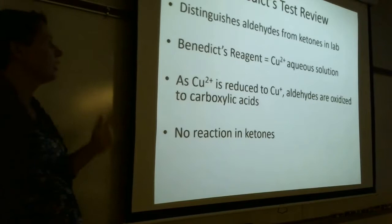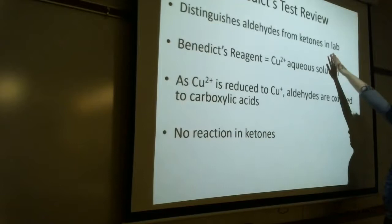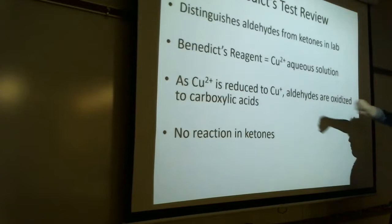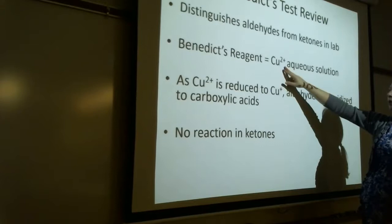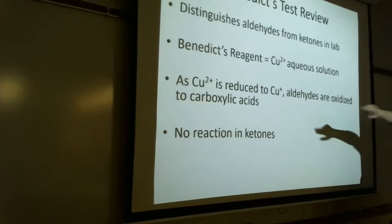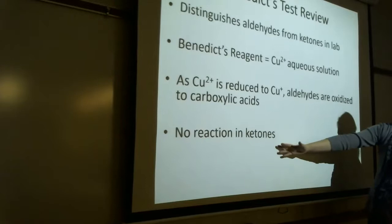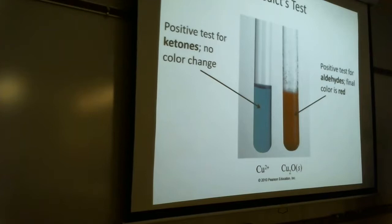Let's review Benedict's test. We actually talked about Benedict's test when we did aldehydes and ketones. This is one of the things that we said we could do in the lab to tell if we had an aldehyde or if we had a ketone. Benedict's reagent is a copper 2 solution, which is blue, and copper 2 gets reduced to copper 1, and that reduction allows for the oxidation of our aldehyde, but in the ketone there's no reaction. So it's a nice pretty test to distinguish aldehydes from ketones.